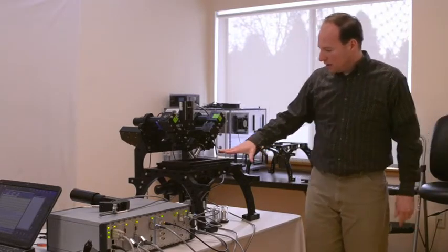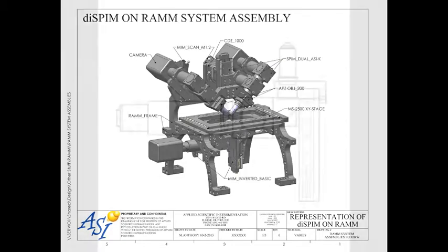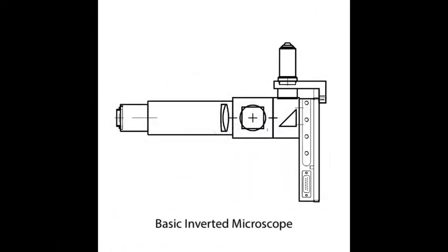So this is mounted on an inverted microscope. In this case, it's shown on a RAM, ASI's RAM frame, and a very minimalist inverted microscope consisting of a motorized objective mover, a port for epi illumination, and a tube lens where a camera would be mounted.